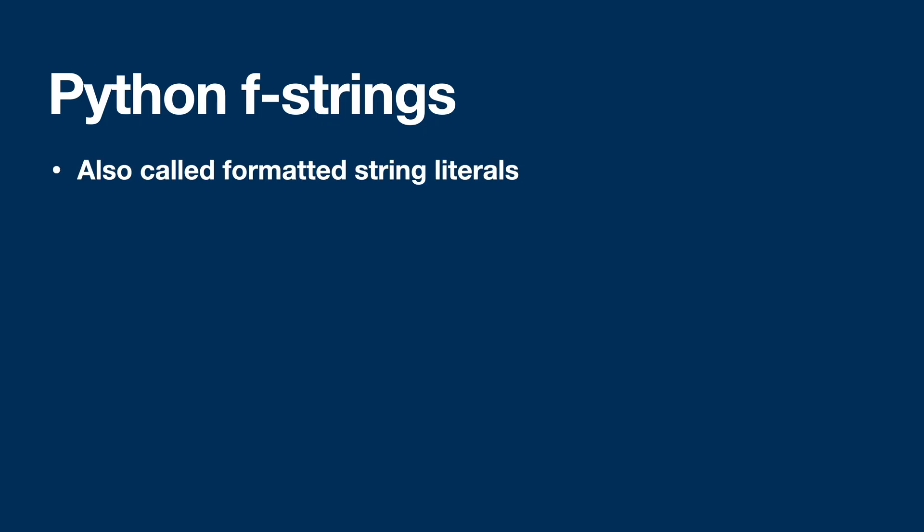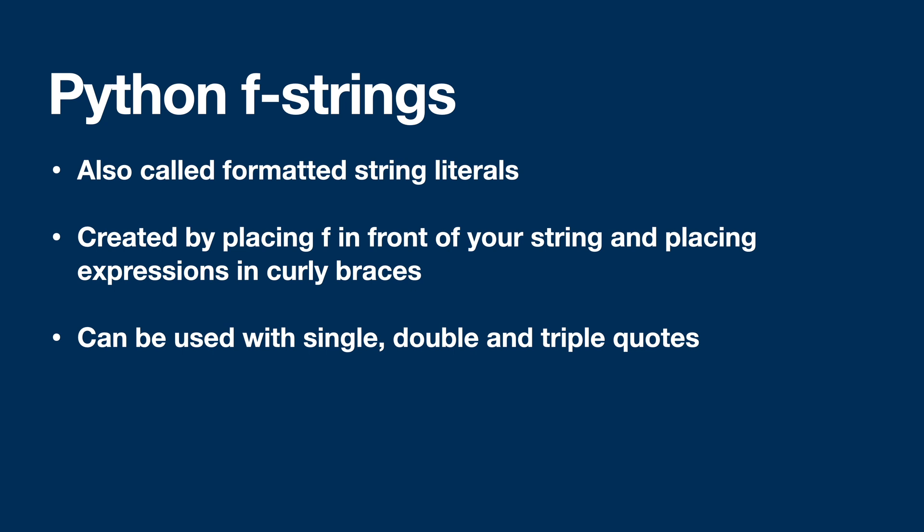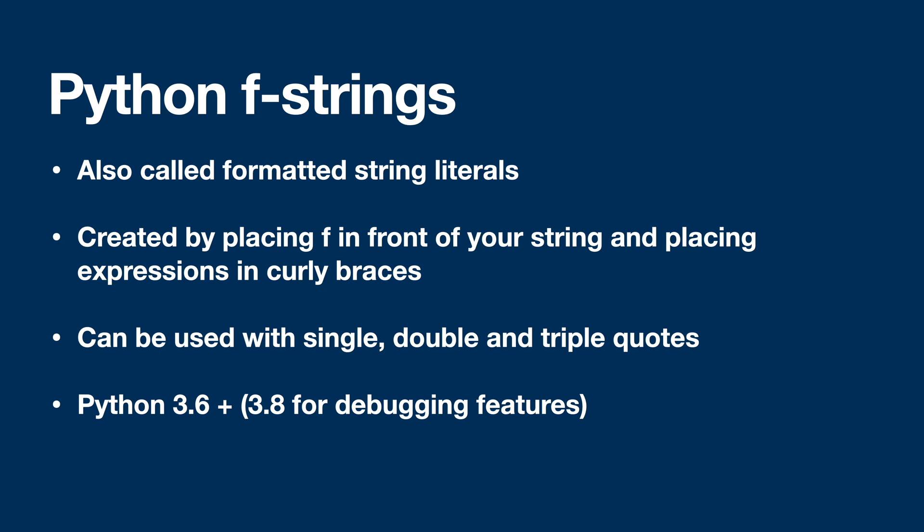So let's talk about Python f-strings. They can also be called formatted string literals. They're created by placing an f in front of your string and placing expressions within curly braces. They can also be used with single, double, or triple quotes. They were introduced in Python 3.6, meaning that you need at least Python 3.6 or higher in order to use them. If you want to use the debugging features, you need at least Python 3.8.